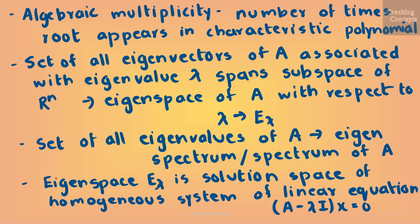Geometrically, the eigenvector corresponding to a non-zero eigenvalue points in a direction that is stretched by the linear mapping. The eigenvalue is the factor by which it is stretched. If the eigenvalue is negative, then the direction of the stretching is flipped.